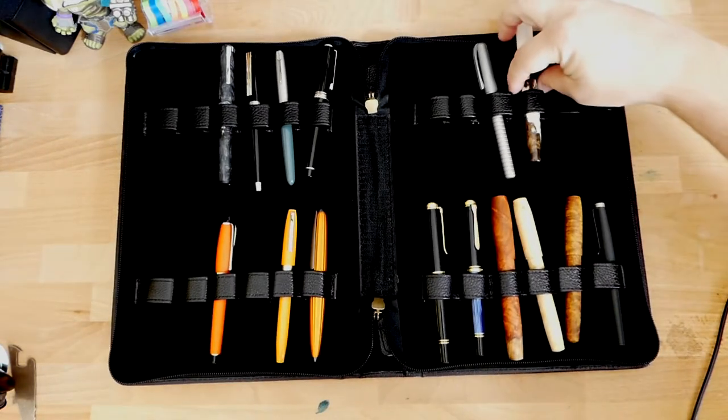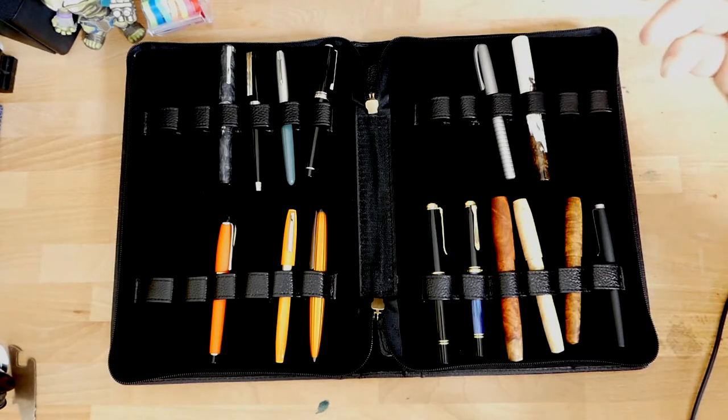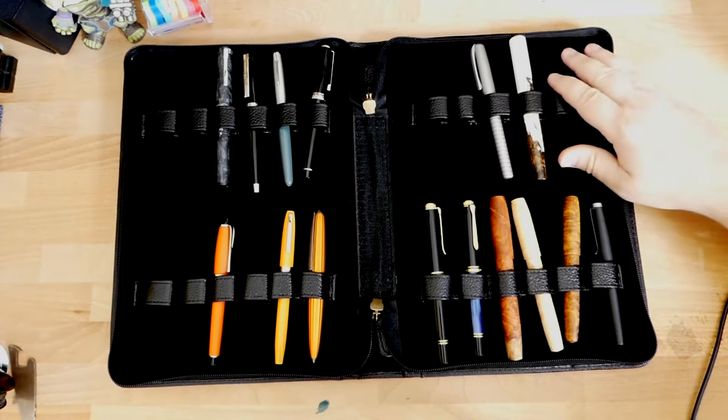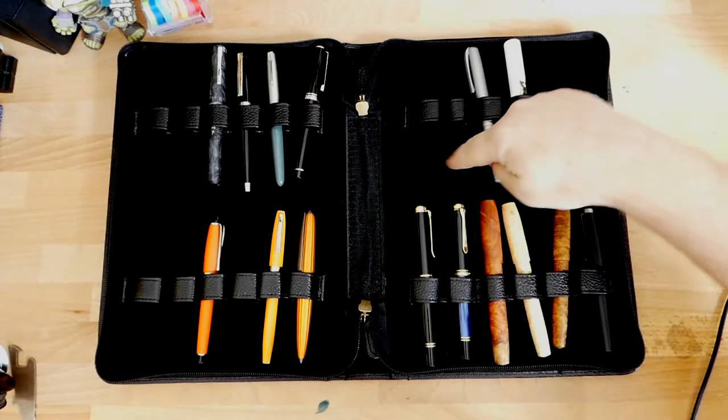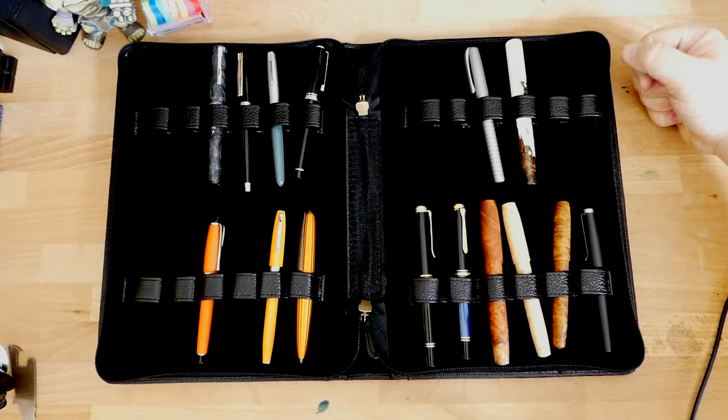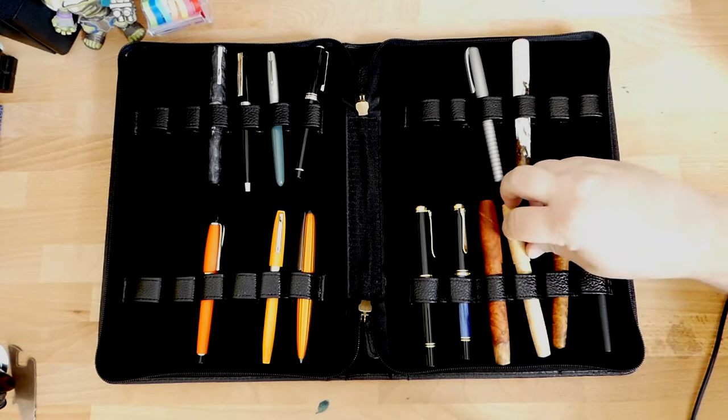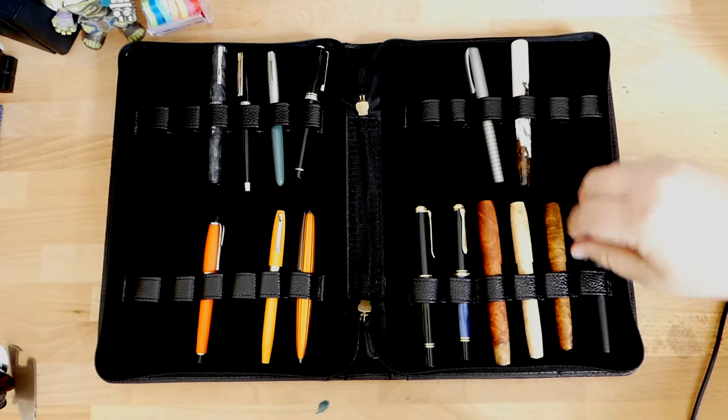So this one just has to go in there, and I have to hope it doesn't move too much, which is not ideal, honestly. I kind of wish there was a better system for that, but I don't know what it would be. Maybe like a little elastic down here. I don't really know how to do it. I'm not a constructor, but this is not terribly convenient because your pens kind of will move around.